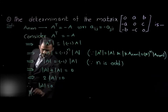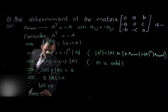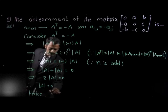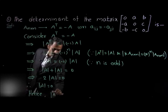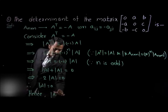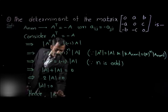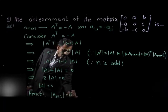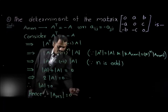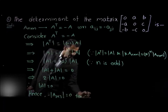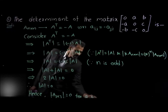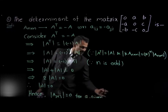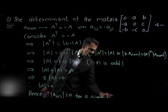Hence, the determinant of the given 3 by 3 skew symmetric matrix is equal to 0.